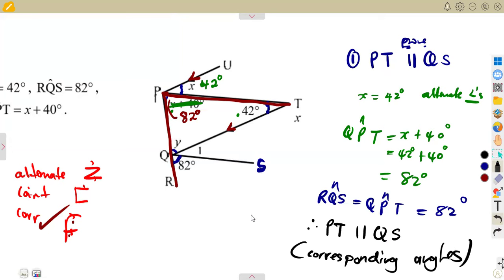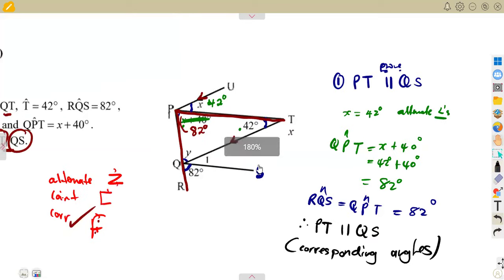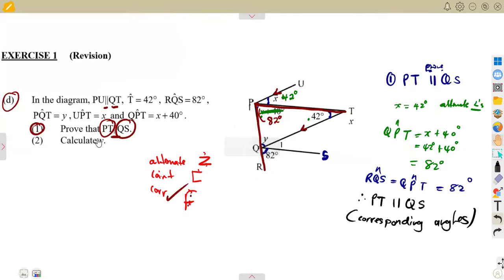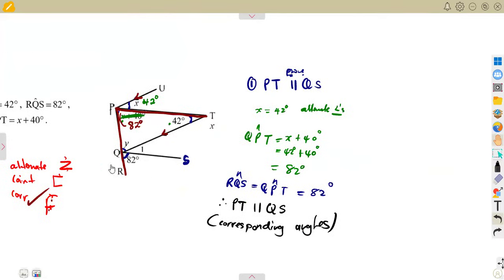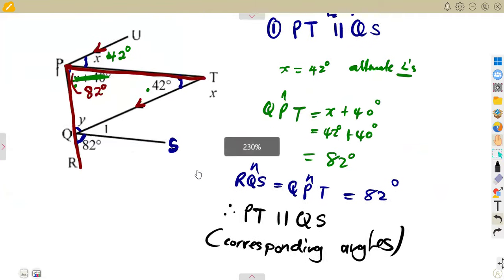Like I said before, you are not going to have corresponding angles always. Another part you prove, maybe there was alternate angles. It depends on the situation that you have on that particular diagram. So that's why I was saying do as many questions as possible. Calculate the value of Y.